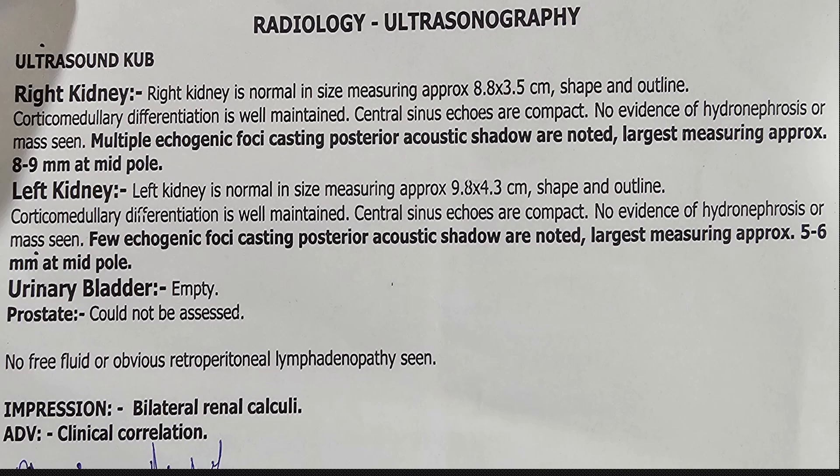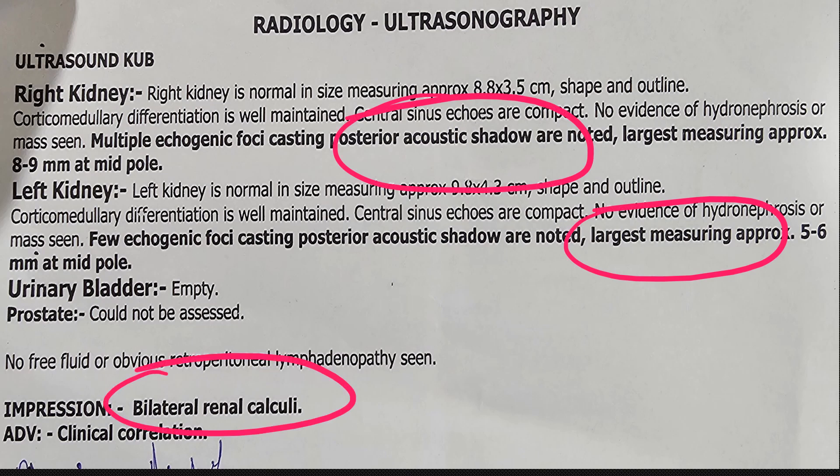This is another sample report where in the impression it is mentioned as bilateral renal calculi — multiple echogenic foci causing posterior acoustic shadow noted, size approximately 9 mm at mid-pole. In this report it is mentioned as renal calculi, whereas in the previous report it is mentioned as renal concretion.